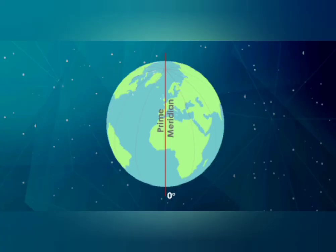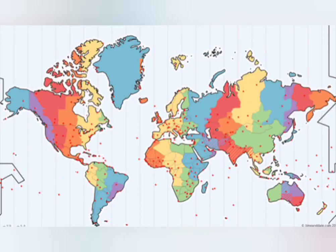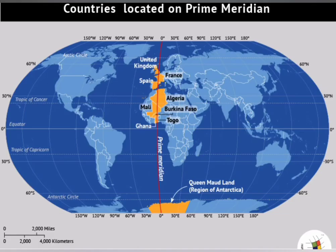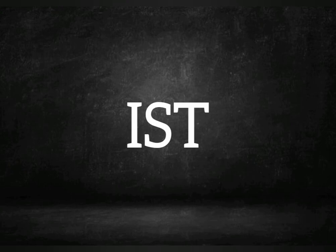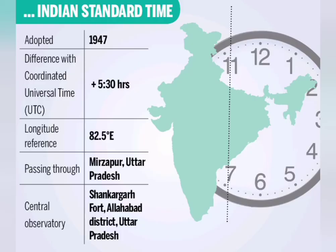Greenwich Mean Time is the time at zero degrees longitude; it is based on the local time of the meridian passing through Greenwich, near London. India's Indian Standard Time (IST) is fixed on the mean of the 82.5° East meridian, near Allahabad, and is five and a half hours ahead of Greenwich Mean Time.